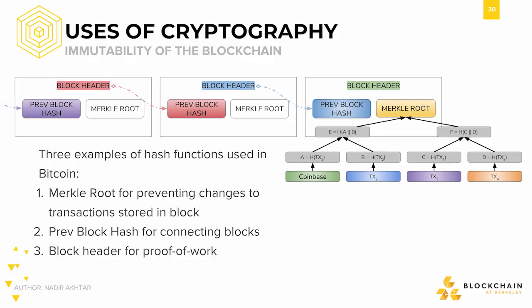Second is the previous block hash, which points to the previous block in the blockchain. This makes the block permanently attached to the previous one. By doing this throughout the blockchain, the chain becomes immutable.